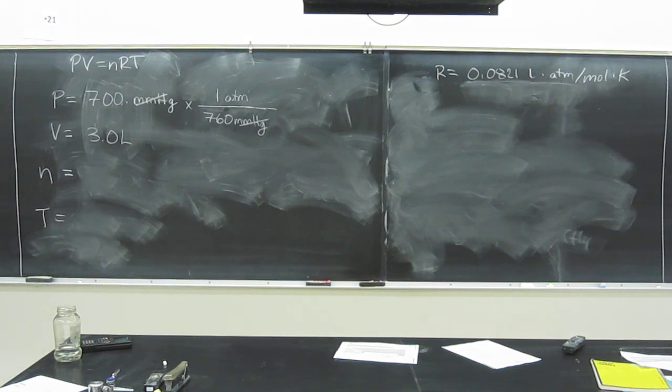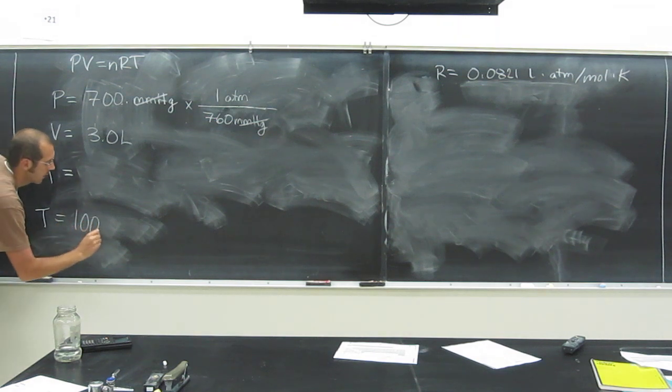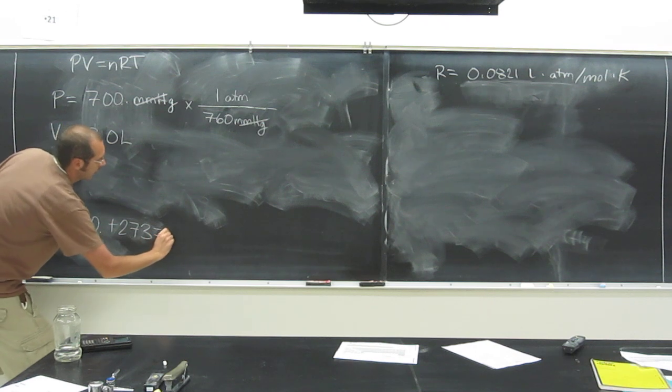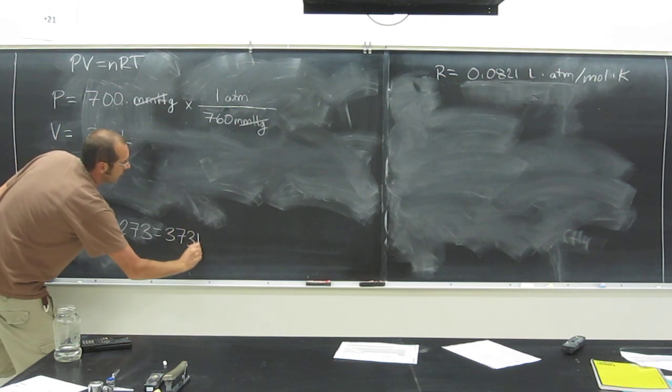N, do we have that? No, that's what we're looking for. In fact, we're looking for N then M. And then T, well, it gives us 100 degrees Celsius, but we add 273 to that because we're looking for Kelvin, 373 Kelvin.